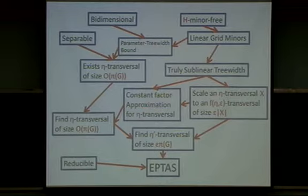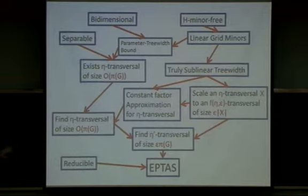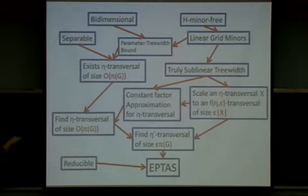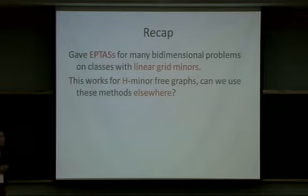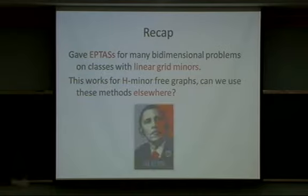To recap: we gave EPTASs for bidimensional problems on classes with linear grid minors. This works on H-minor-free graphs but is quite general: the only thing we used about these graph classes is that they have linear grid minors, giving portability. The question now is: can we actually apply this elsewhere? The answer is yes — we can go to geometric graphs.